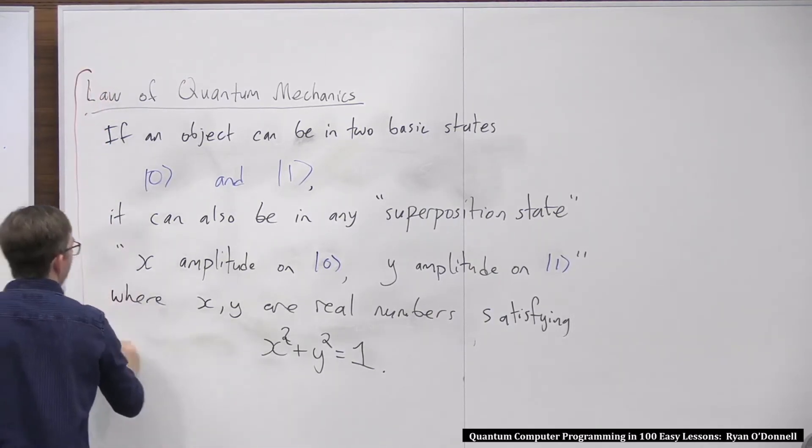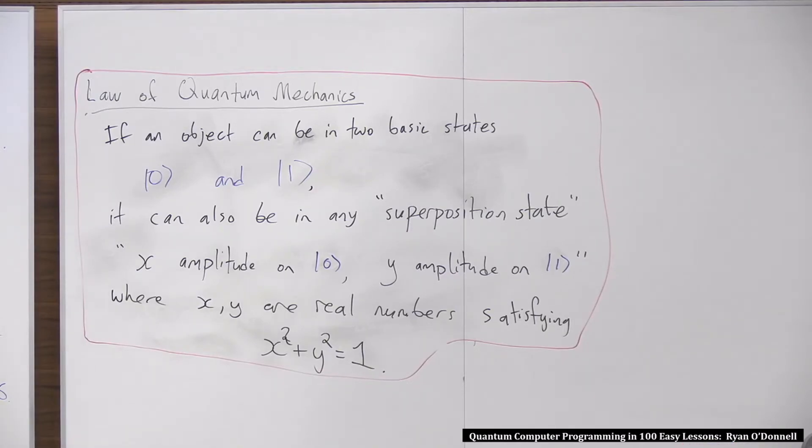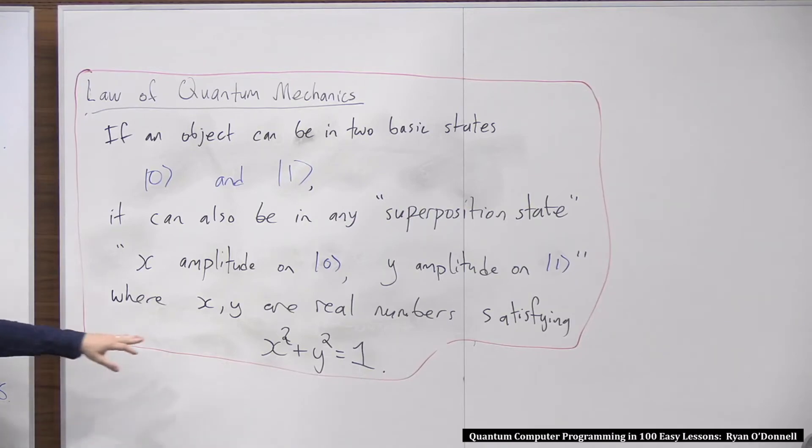Okay? So this is a very important law of quantum mechanics. I should put it in a box or something. This is something that physicists figured out in the 1910s or something. So 110 years of physics have verified this fact. Okay, so if an object can be in two basic states, which we'll call 0 and 1, let me try to use some colors at least briefly here. Okay, and it could be, these are abstractions. I mean, it could be up and down, and up is 0 and 1 is down, or it could be, I don't know, heads or tails. Okay, then it could also be in any superposition state. And the superposition state looks like the following: x amplitude on 0, y amplitude on 1.